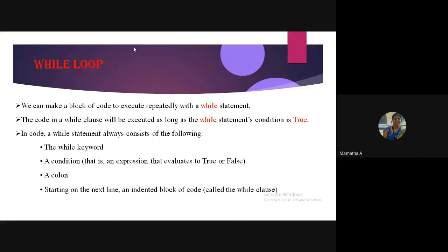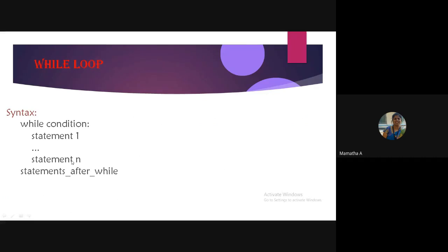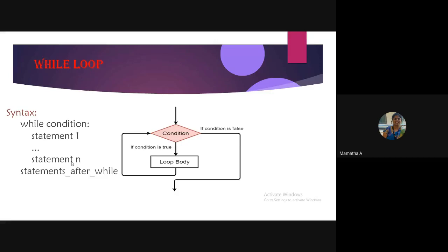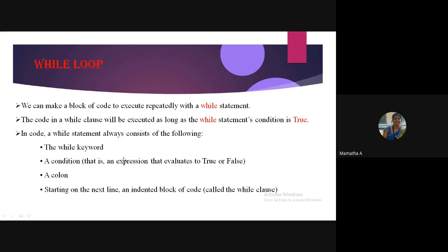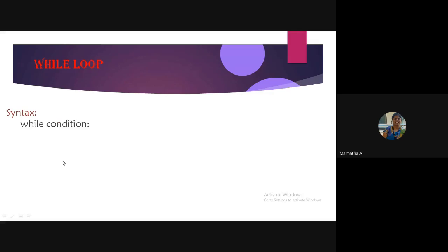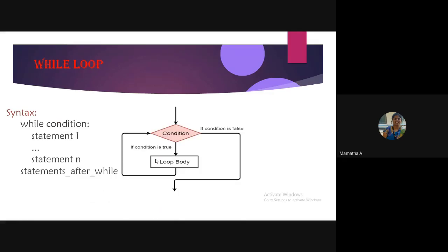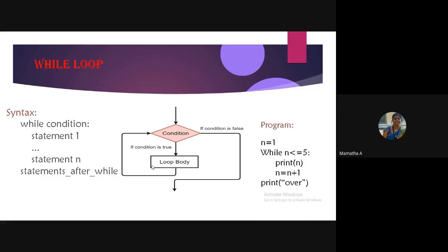You should give this full description if they ask for the syntax. This carries one mark. If it is for five marks: one mark for explaining what the while loop is, one mark for the syntax description, writing the syntax for three marks, then the flowchart for four marks, and a small example program for one or two marks depending on the examiner.